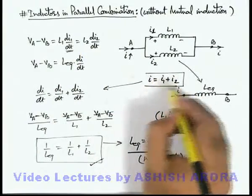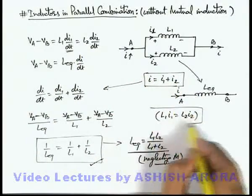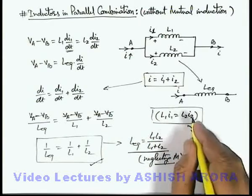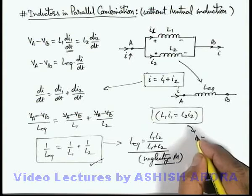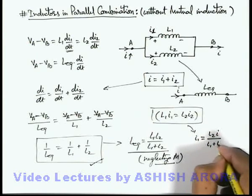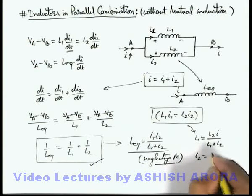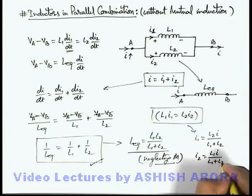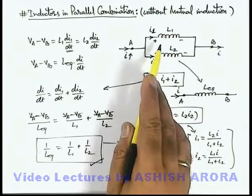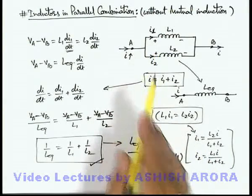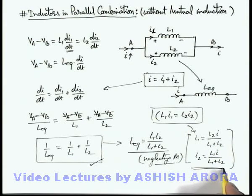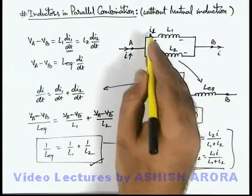And as i is always i1 plus i2, then using these two relations we can define the value of i1 and i2. As i1 here we can write as L2 i over L1 plus L2, and i2 we can write as L1 i over L1 plus L2. This also verifies that the currents are distributed in two inductors in parallel in inverse ratio of their inductances. So whenever required, you can also use these results for calculations of i1 and i2.